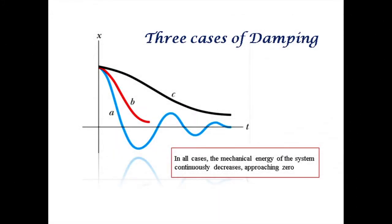Going back to the equation omega equals the square root of (ω₀² minus γ²/4), we notice that there are three different types of damping: underdamping, critical damping, and overdamping.